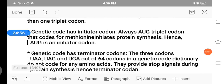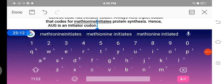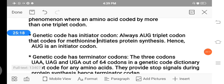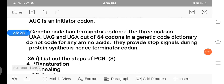Then the genetic code has an initiator codon. Yes, AUG is a triplet codon that codes for methionine and initiates the protein synthesis. Hence, AUG is an initiator codon. AUG first codes methionine, a protein amino acid that initiates the protein synthesis. Then the genetic code has terminator codons. The three terminator codons are UAA, UAG, and UGA out of 64 codons. They provide stop signals during protein synthesis. Hence, they are called terminator codons.